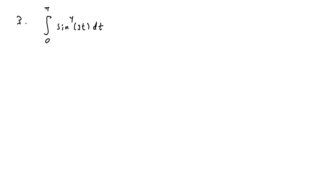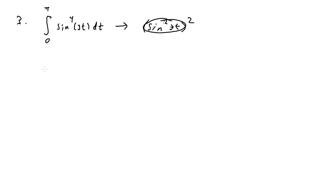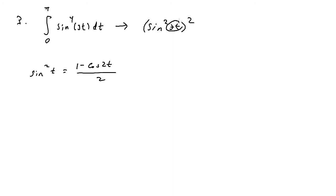For number three we have the integral from zero to pi of sine to the fourth of three t, dt. When we have sine or cosine raised to the fourth power, I'll rewrite it as sine squared of three t, the entire thing squared. Using the half-angle formula, sine squared of three t equals one minus cosine of six t over two, and the entire thing is still squared.